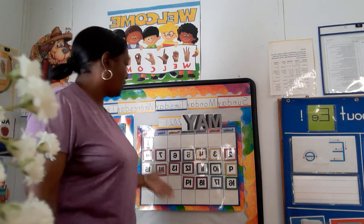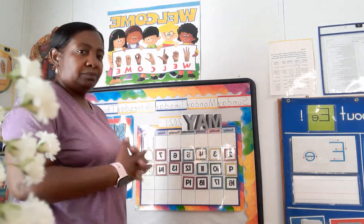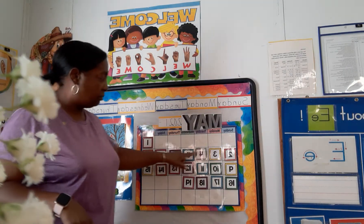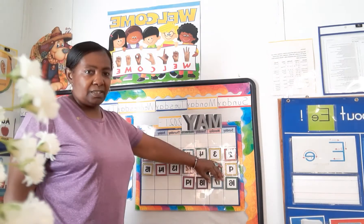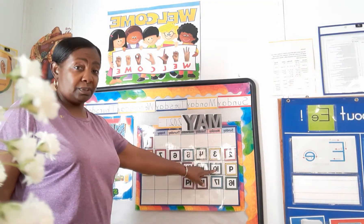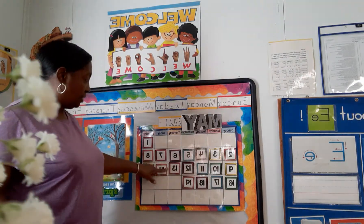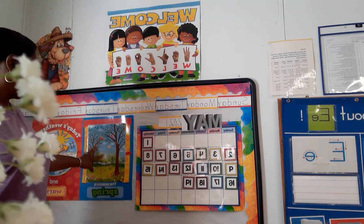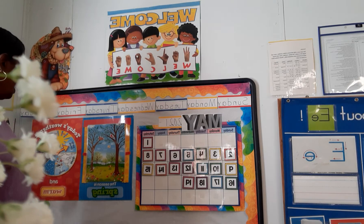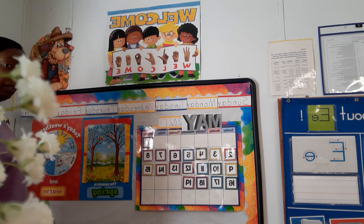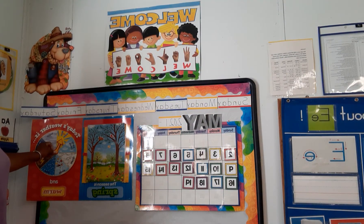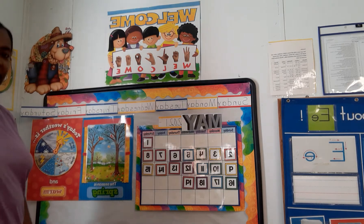Let's look at the calendar again. We're going to look for all the single-digit numbers — just one number. When you get to 10, it's two numbers, so that's a double-digit number. We're still in spring, and today's weather is sunny and warm.